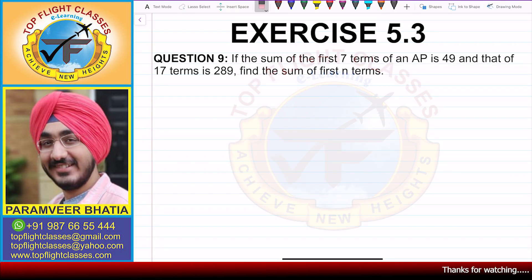Now question number 9 says if the sum of the first 7 terms of an AP is 49 and that of 17 terms is 289, find the sum of first n terms.